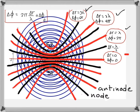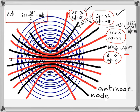The nodal lines, drawn in black, are characterized by destructive interference. The first nodal line adjacent to the central antinodal line has ΔR = λ/2, giving a phase difference of π — so the two waves arrive out of phase. Other nodal lines have ΔR = 3λ/2 (ΔΦ = 3π) and ΔR = 5λ/2 (ΔΦ = 5π) — all odd multiples of λ/2.